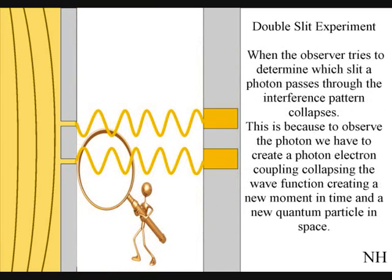When the observer turns on a detector to determine which slit a photon passes through, the interference pattern collapses. At that moment in time, the interference pattern disappears, because to observe the photon, we have to create a photon-electron coupling, collapsing each wave-front into a new quantum particle that will have its own position in space and time.